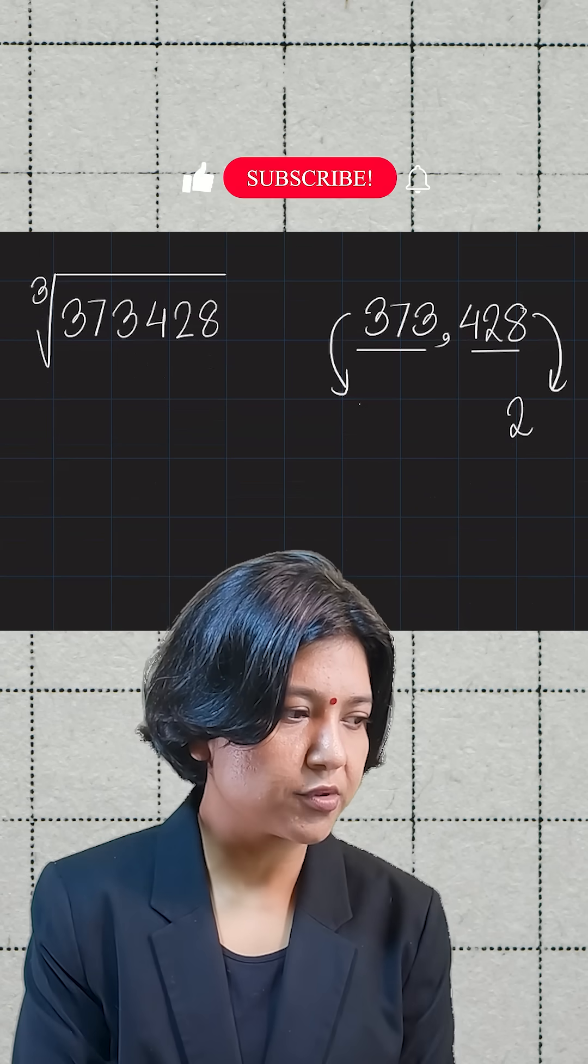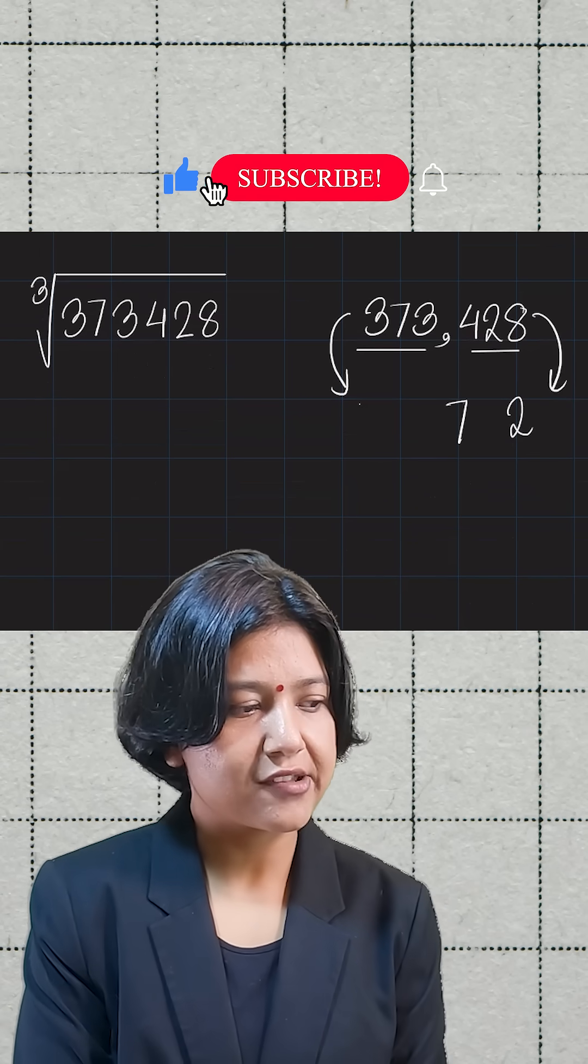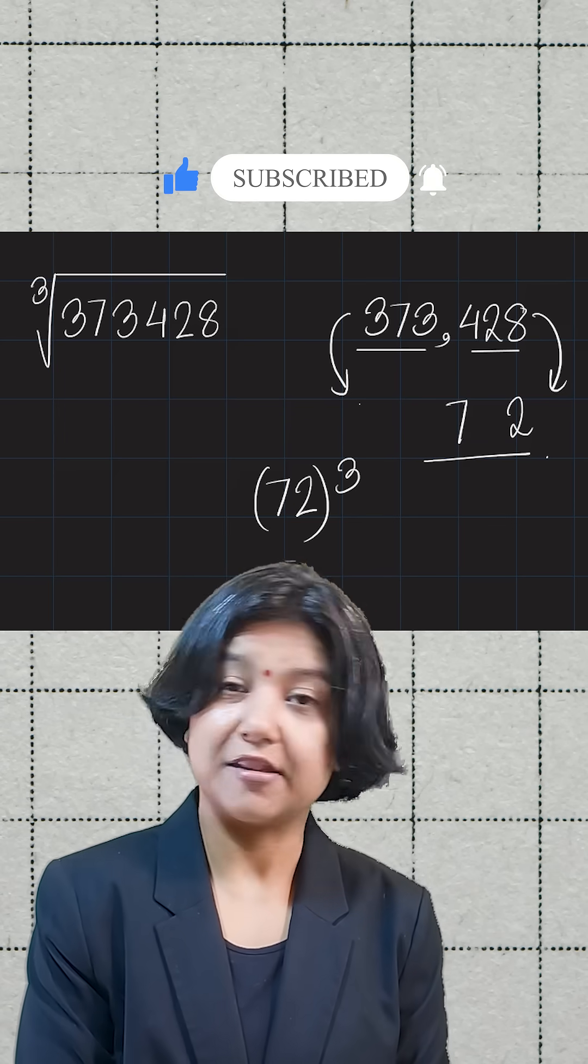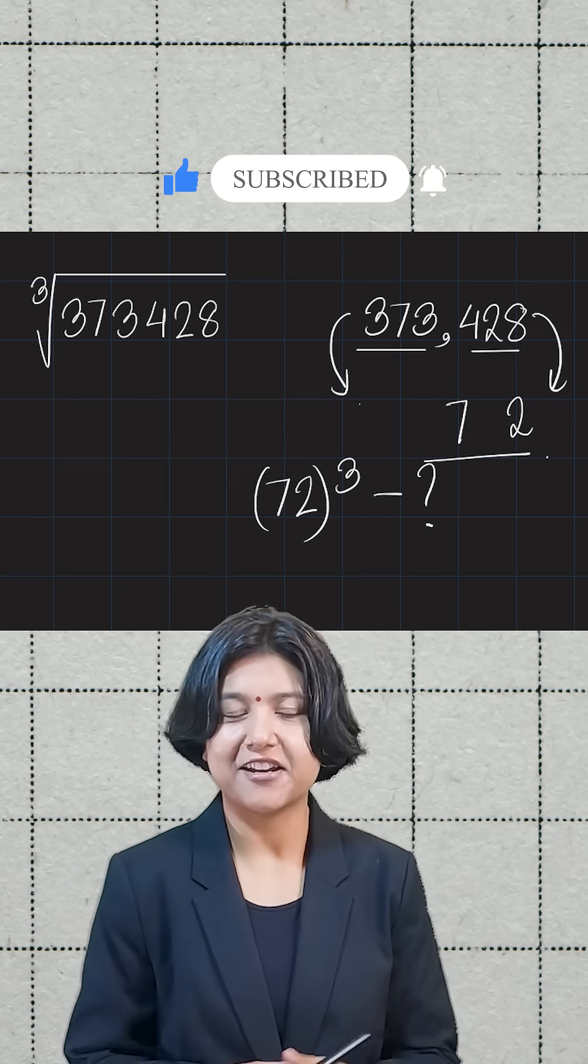Meaning, 373 is close to cube of 7. So the answer has to be 72. You can check in your calculator if 72 cube is the given number or not.